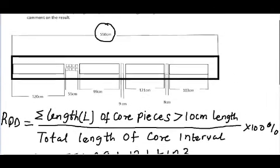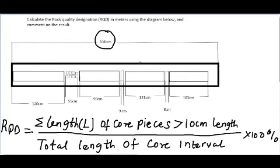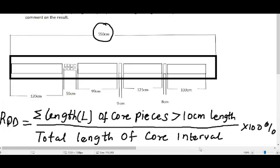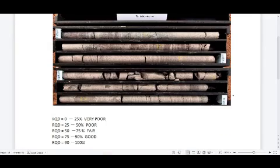Let's comment on the result. RQD value of 0 to 25% is very poor. RQD value of 25 to 50% is poor, 50 to 75% is fair, 75 to 90% is good, and 90 to 100% is very good.